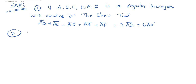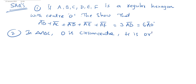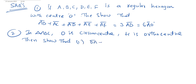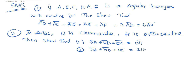Second question: In triangle ABC, O is the circumcenter and H is the orthocenter. Then show that: (1) OĀ + OB̄ + OC̄ = OH̄, and (2) HĀ + HB̄ + HC̄ = 2HŌ.